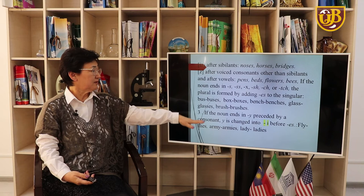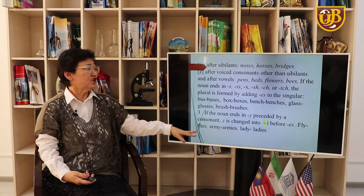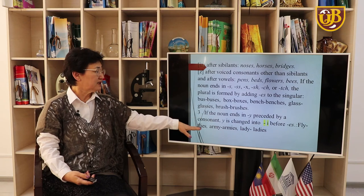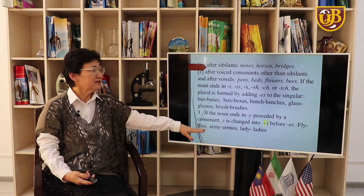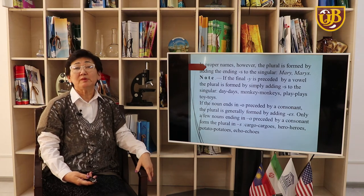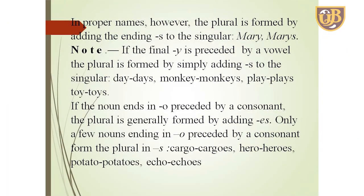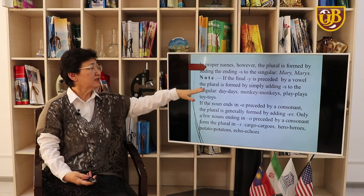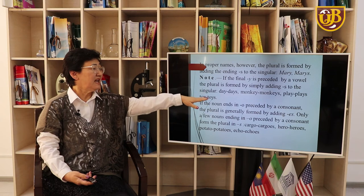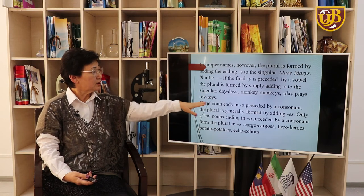If the noun ends in -y preceded by a consonant, -y is changed into -i before -es: fly → flies, army → armies, lady → ladies. In proper names, however, the plural is formed by adding -s: Mary → Marys. If the final -y is preceded by a vowel, the plural is formed by simply adding -s: days, monkeys, plays, toys.